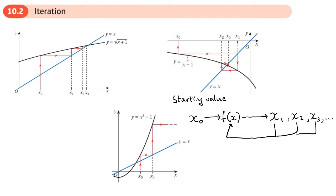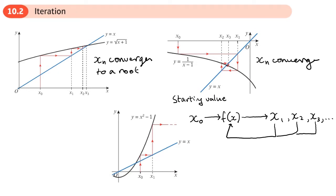Sometimes these values of x, as you work them out, will get closer and closer to the root; sometimes they will get further away. When they get closer to the root we say that xn converges to a root — xn being the number of times we've done the iteration. Here xn converges, whereas here xn diverges — it's not getting closer to anything, it just diverges away from any roots that exist.